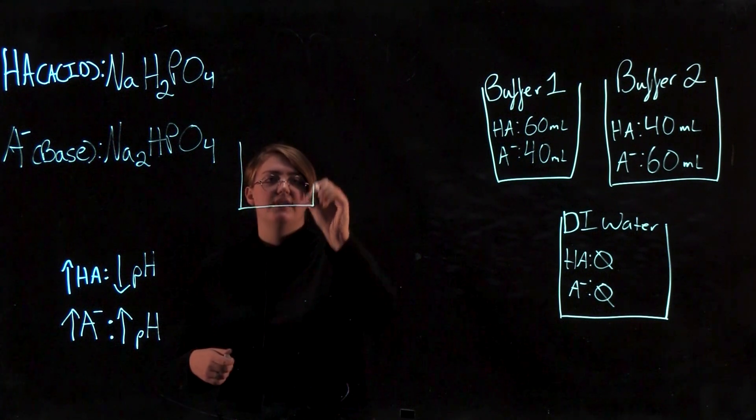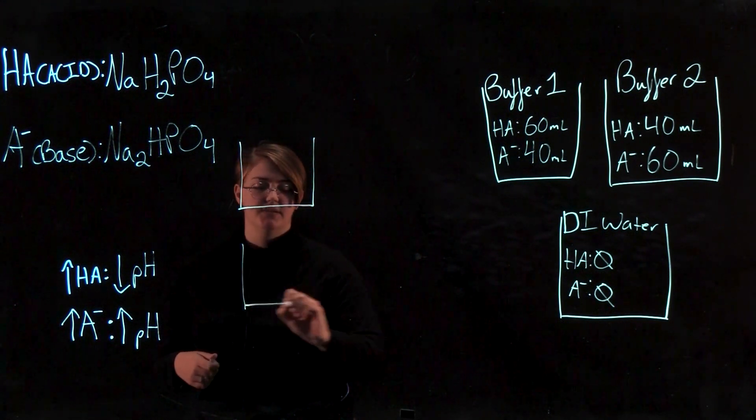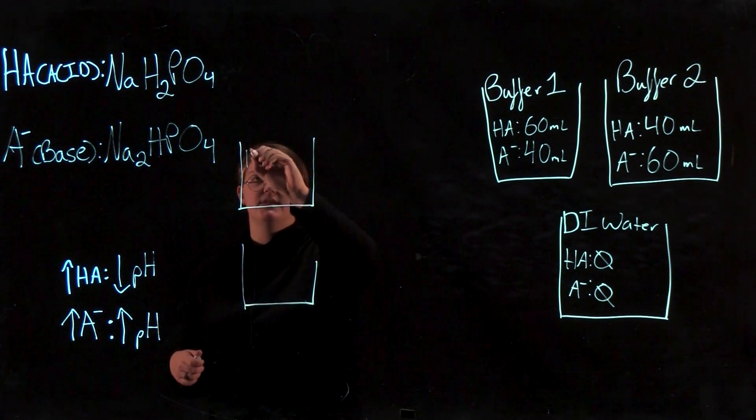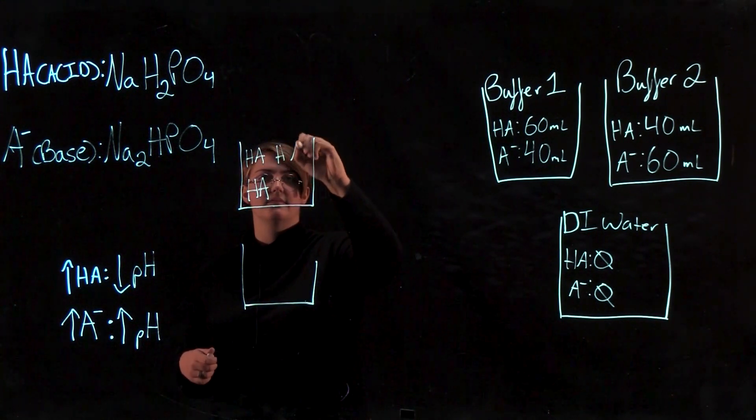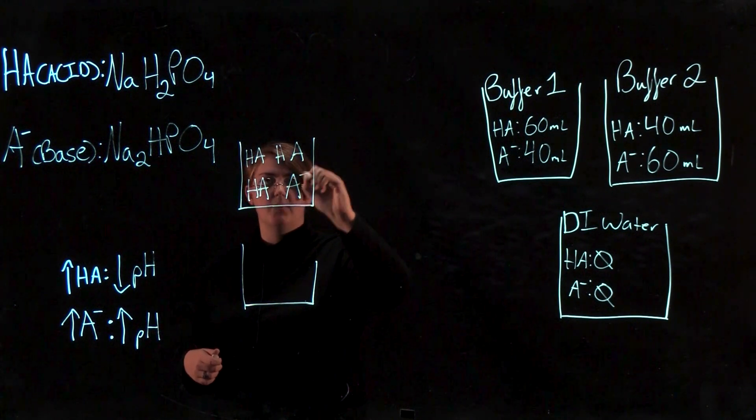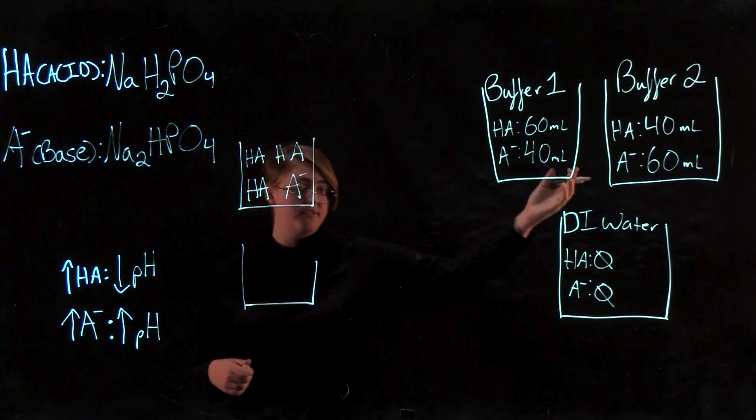To think about that, we're going to have two imaginary beakers - one filled with more acid and one filled with more base, just like our buffers 1 and 2.